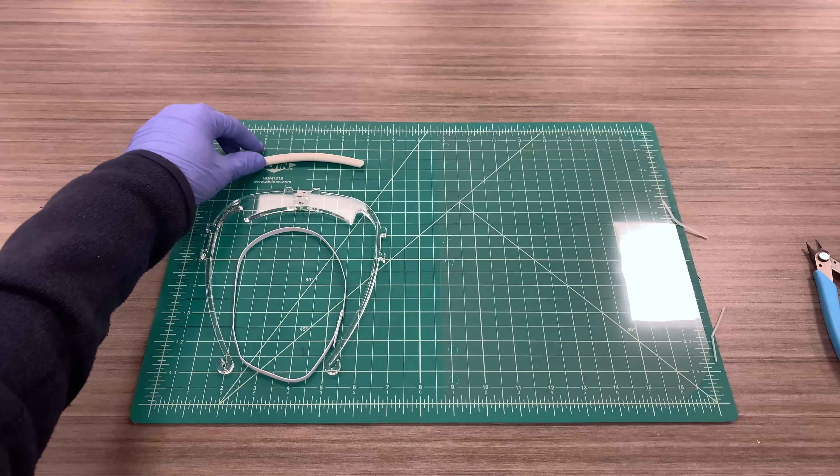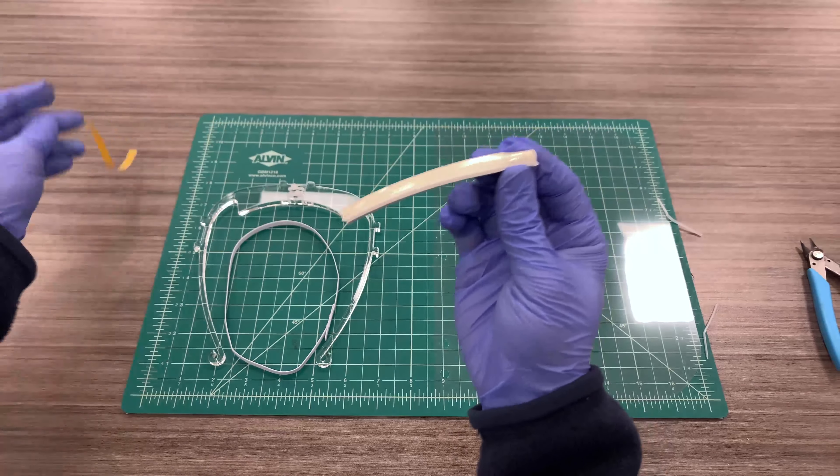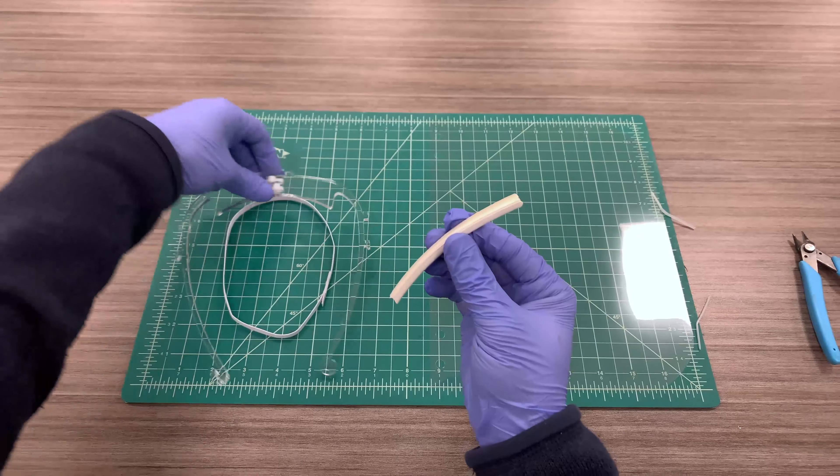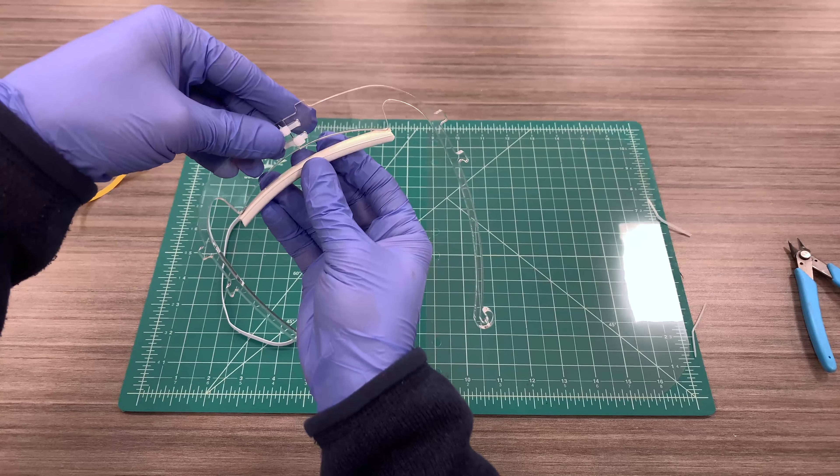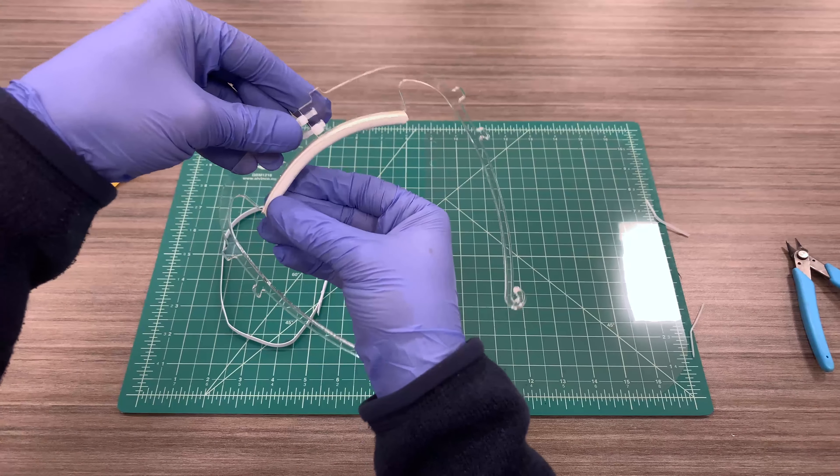So now we're going to attach the rubber. It's weatherstripping. You peel the sticker off. You line it up as best you can to the center, and just press in and make sure it sticks throughout.